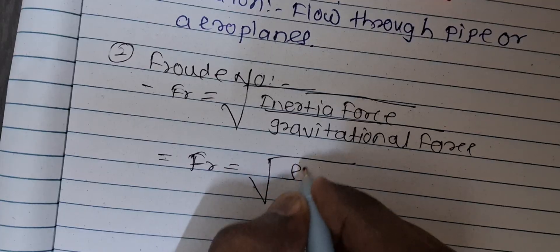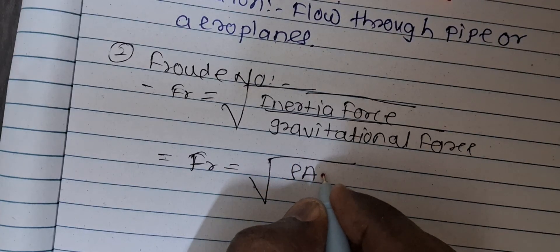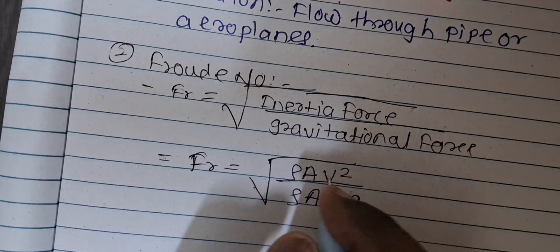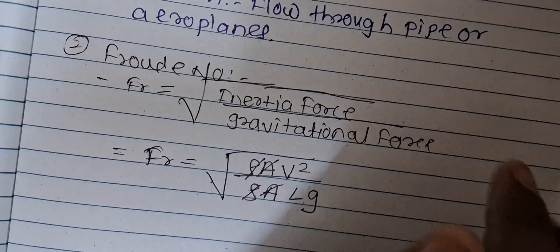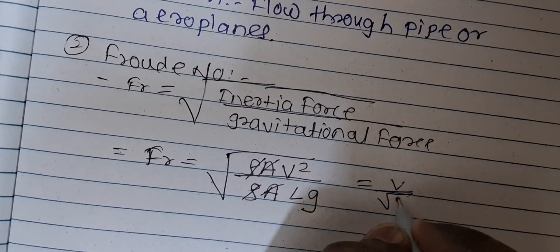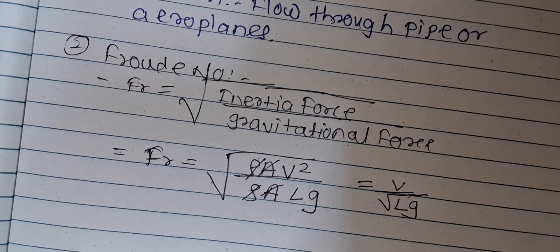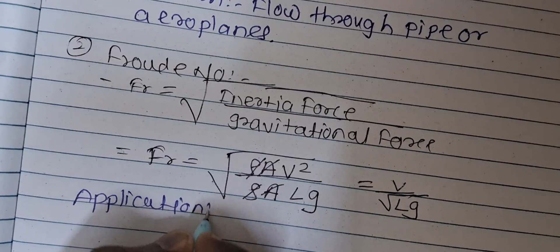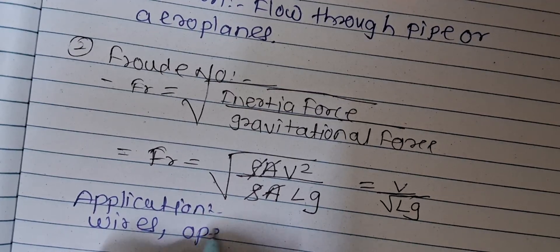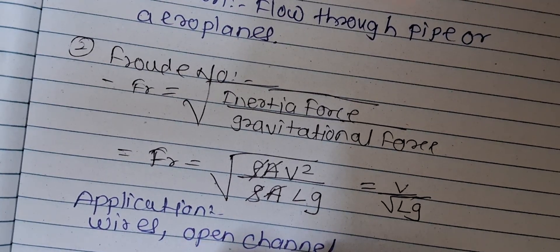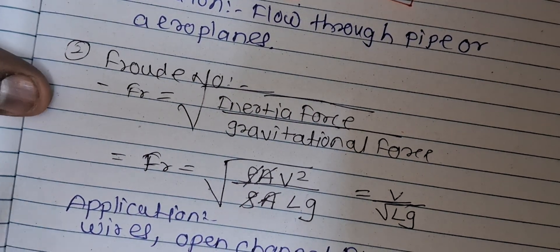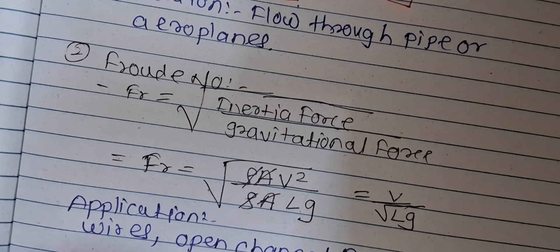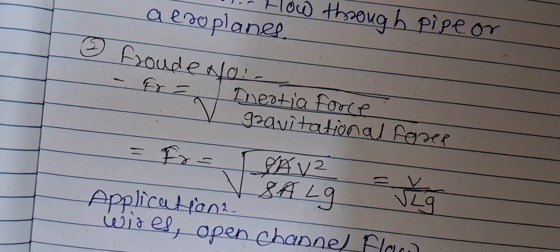The Froude number formula: Fr = √(ρAV² / ρALg). Here ρ and A cancel, V² comes out of the root as V, giving Fr = V / √(Lg). Its application is for open channel flow. For the exam, a minimum of two definitions for two marks, three for six marks, etc.